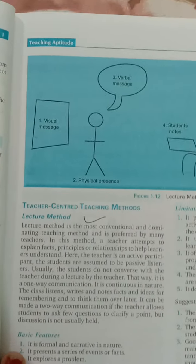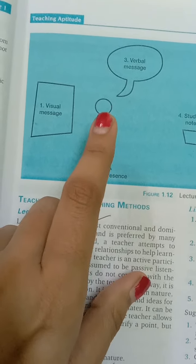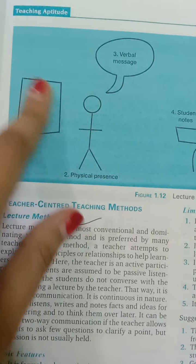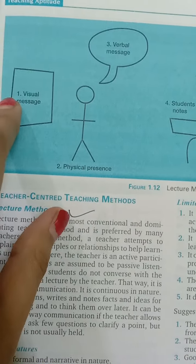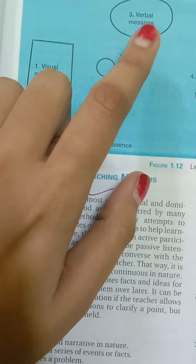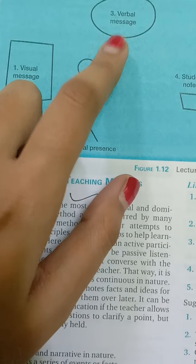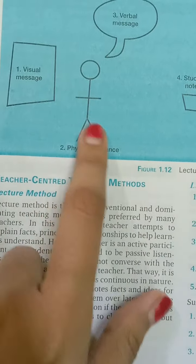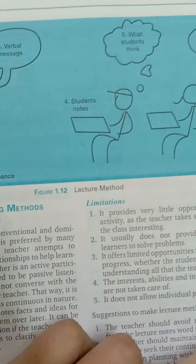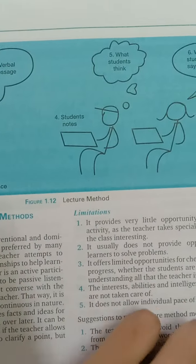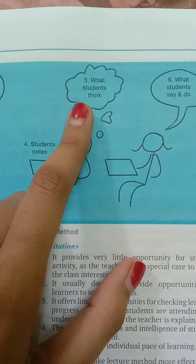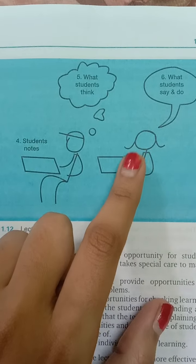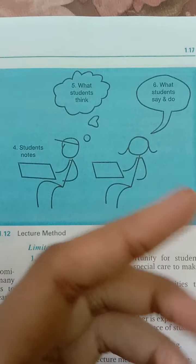Now the methods of teaching — a diagram shows a teacher with visual image, verbal message (what the teacher speaks), and physical appearance, while students are shown taking notes, thinking, and responding.